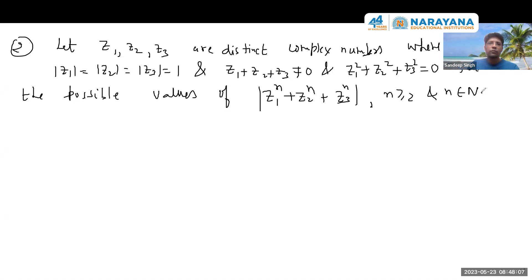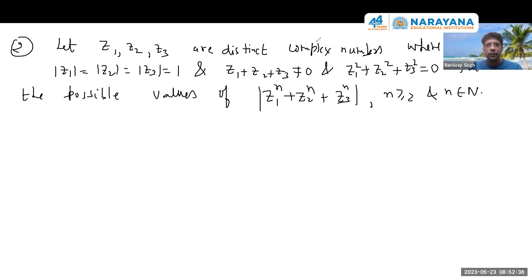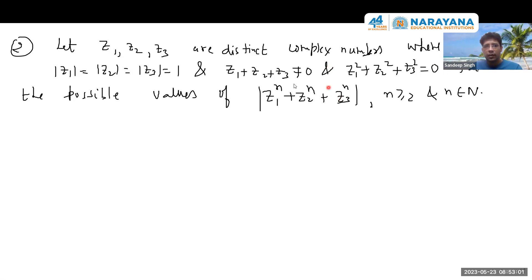Next problem: z1, z2, z3 are distinct complex numbers, their magnitudes are all unity, their sum is non-zero, sum of squares is zero. Find all possible values of the modulus of their nth powers sum. You have to get all possible values. Keep the sanctity of the problem in the complex domain itself and try to figure out using properties of modulus what can be said.